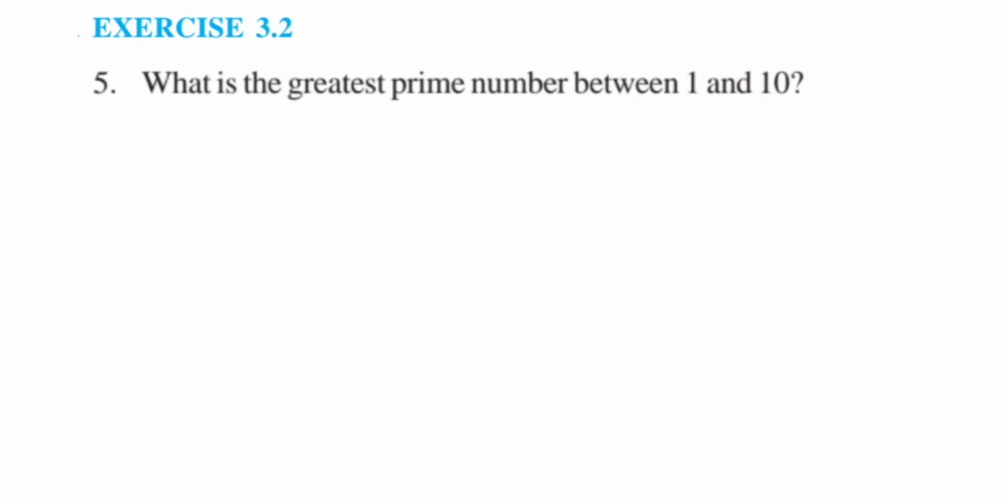Prime numbers are the numbers which have exactly two factors. Factors means they are divisible by only two numbers, or we can say they are multiples of exactly two numbers.